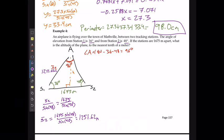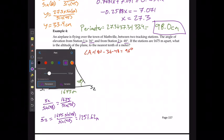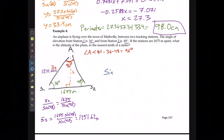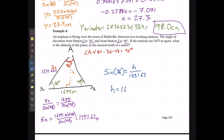Because I have the right triangle that exists in here, I've just solved for what the hypotenuse is. I know one of the angles, and the height is the side length opposite. So sine of 36 degrees is going to equal the opposite H over the hypotenuse 1,251.62, or H is going to equal 1,251.62 times sine of 36. H is going to equal 735.7 meters.